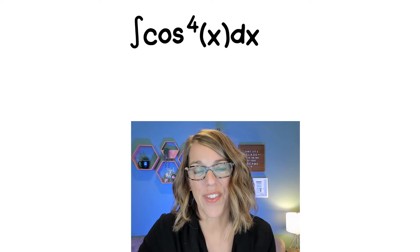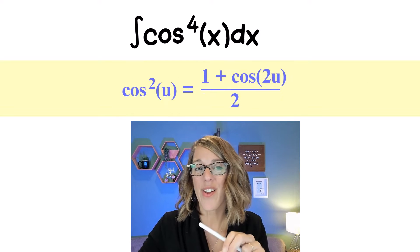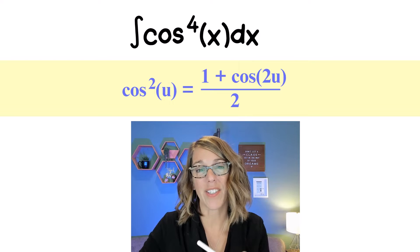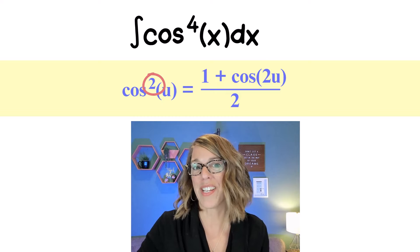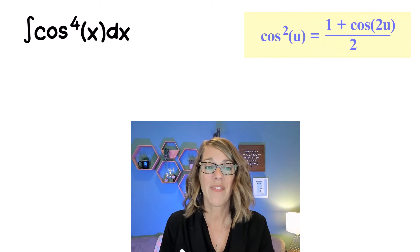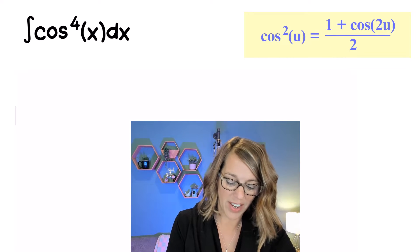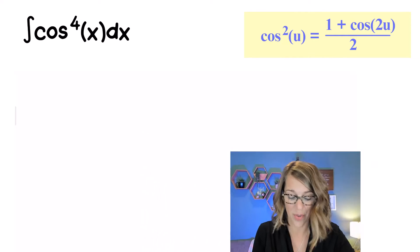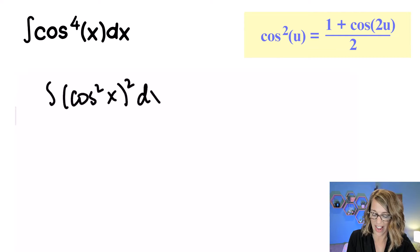Let's integrate cosine to the fourth of x. In order to do this we're going to need our power reduction formula. The power reduction formula gets you from squared to cosine in the first degree, but we really want to get from cosine to the fourth, so we're going to end up applying this twice. The first thing I want to do is rewrite cosine to the fourth so that I've got cosine squared, squared.